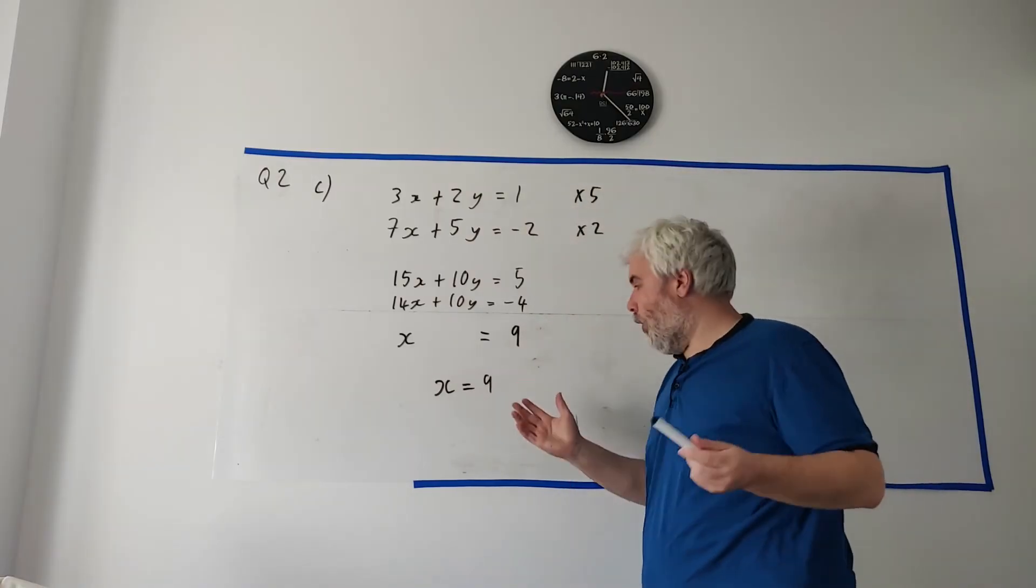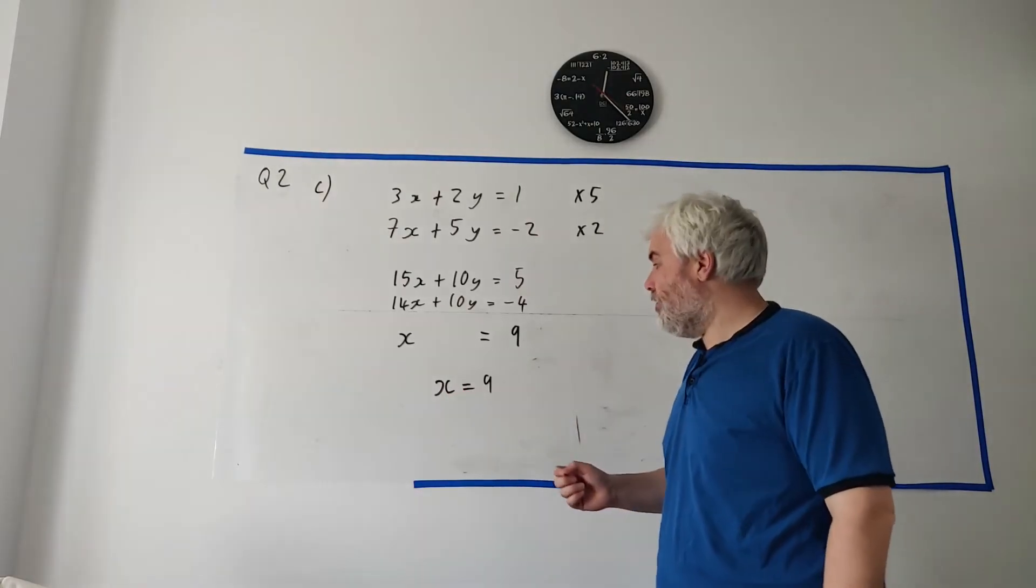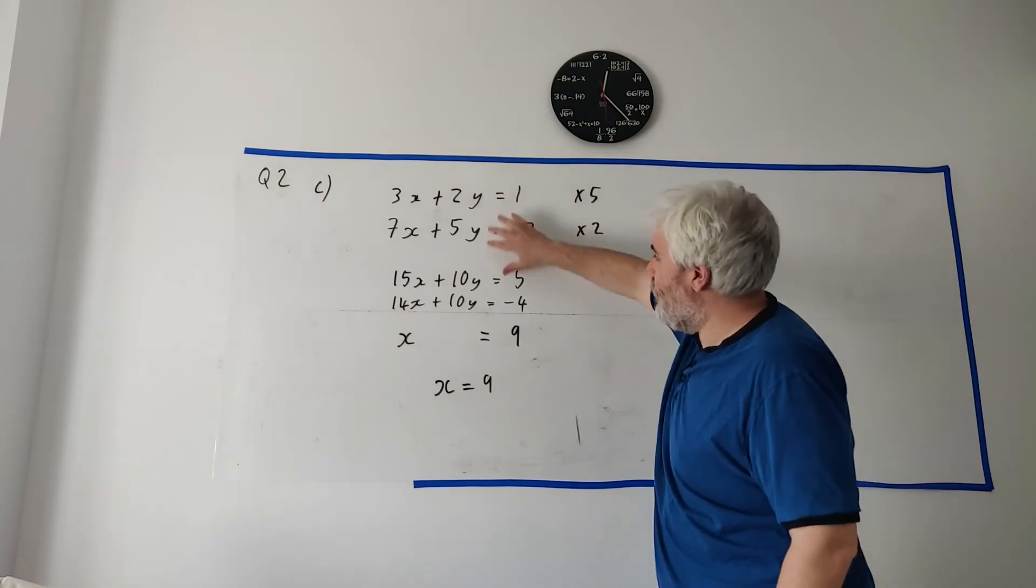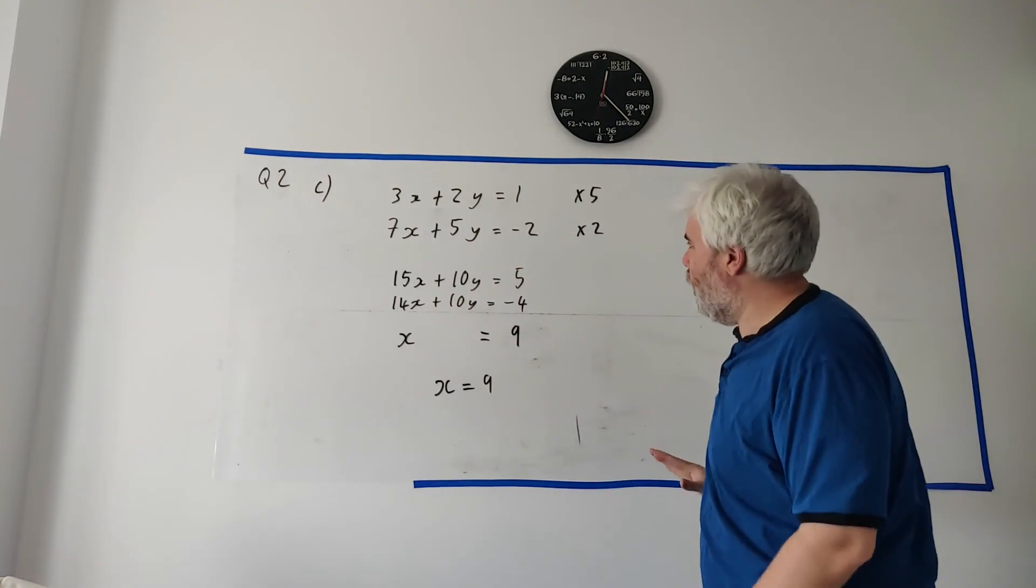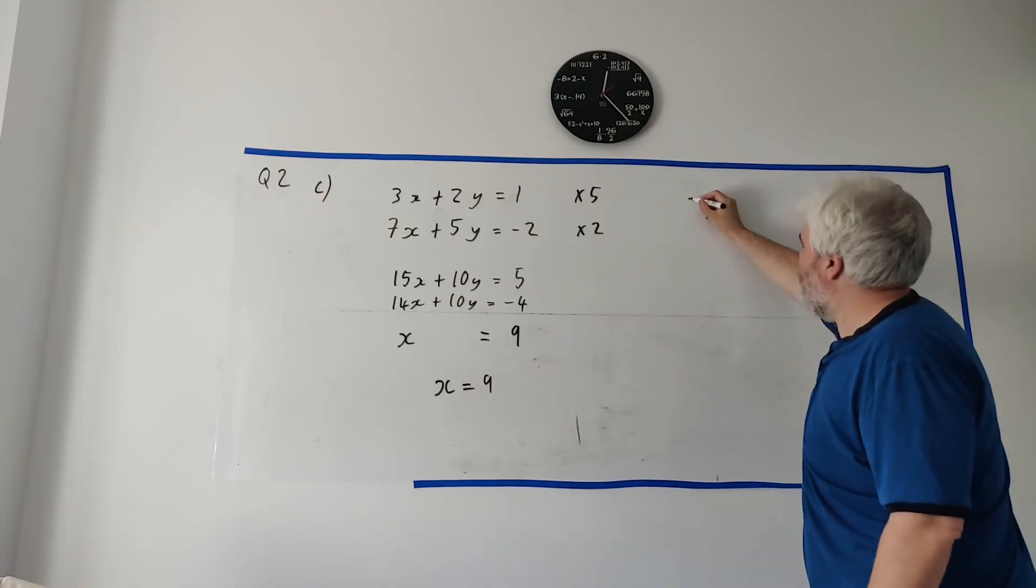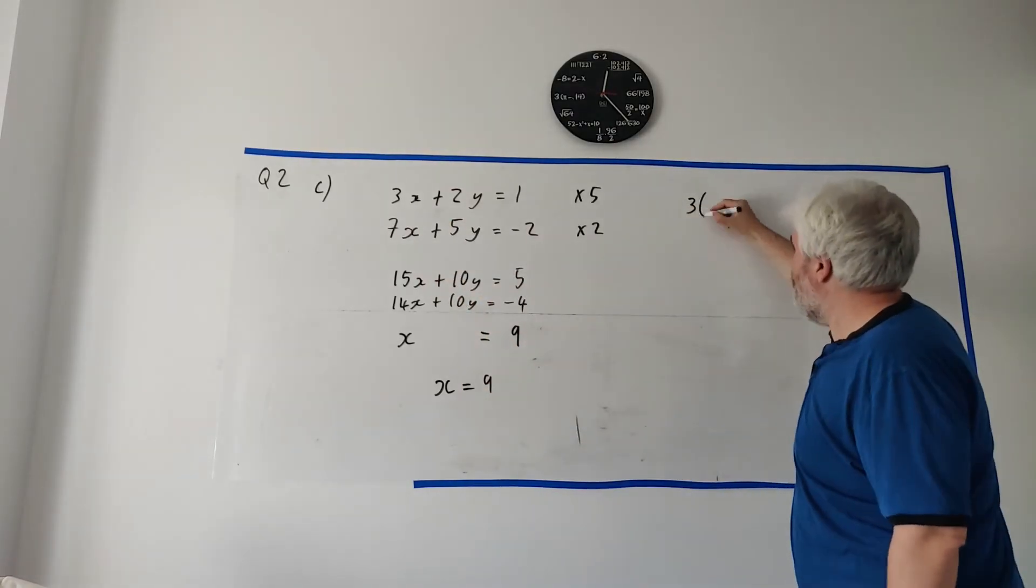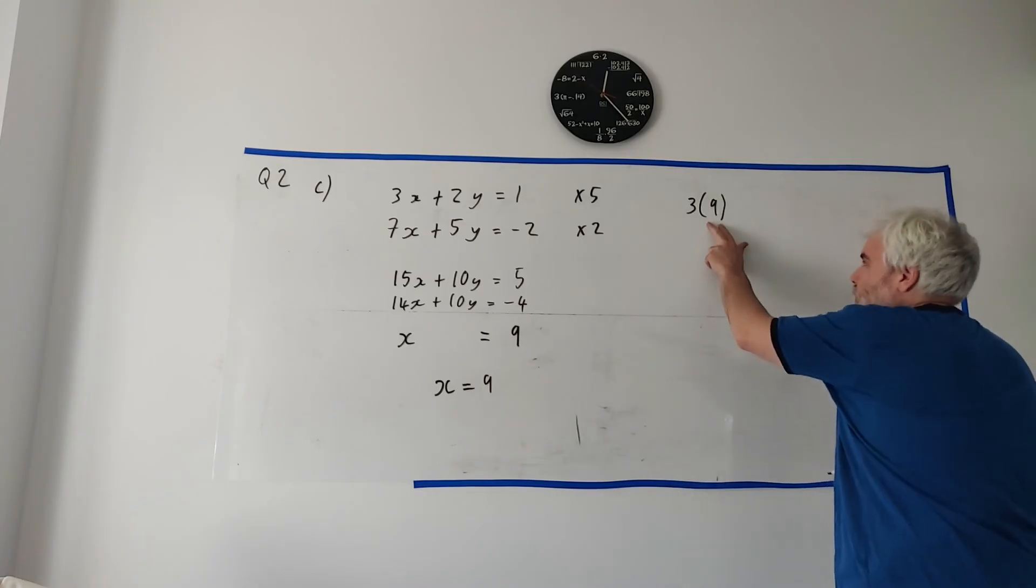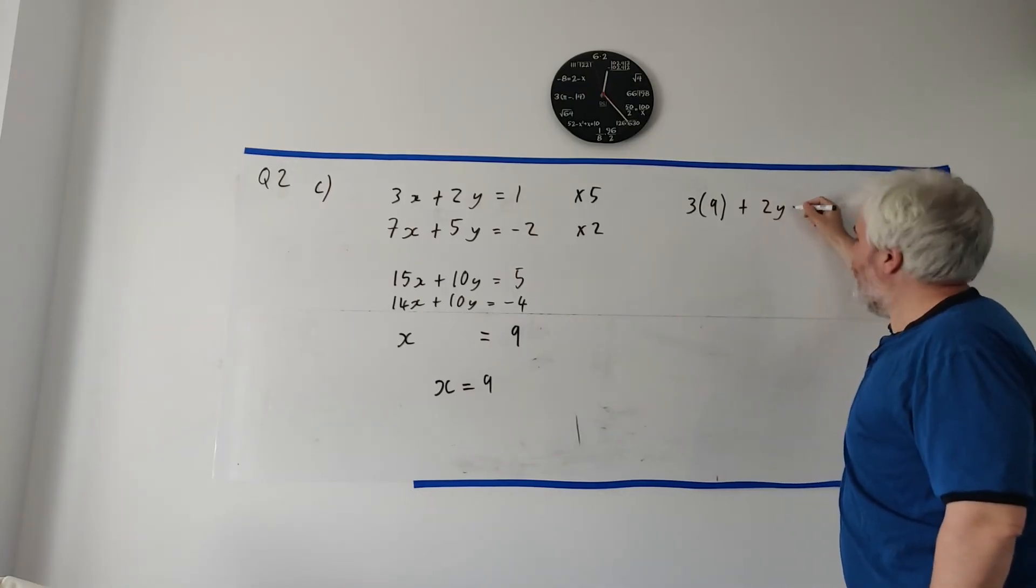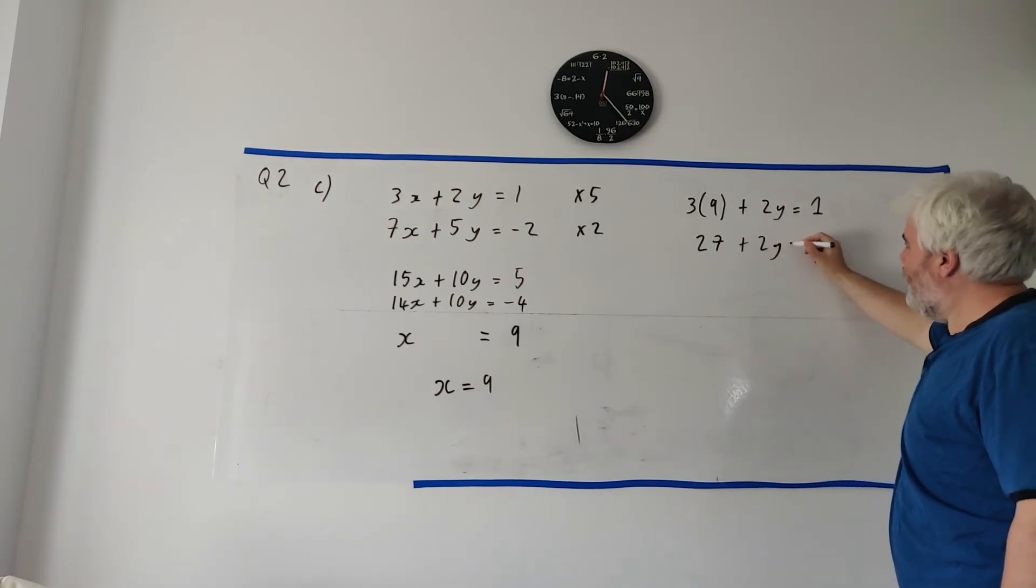Many students will now walk away. They'll go, I'm finished. I'm done that question. Next question. No, they did not ask you to find X. They asked you to find X and Y. We need to find Y as well. To do that, pick any equation you want. Even if you've done different equations, they'll all work. Pick any one of these you want. I'll just go ahead and pick the top one. And write it again. So 3X, 3, X. We know what X is. So don't write X. Write the number you know. 3 multiplied by 9. When you're inserting something, put a bracket. So you don't mix it up with 39. So 3X plus 2Y is equal to 1.